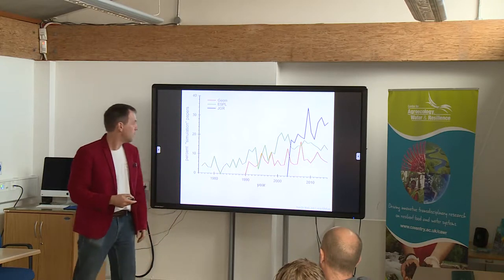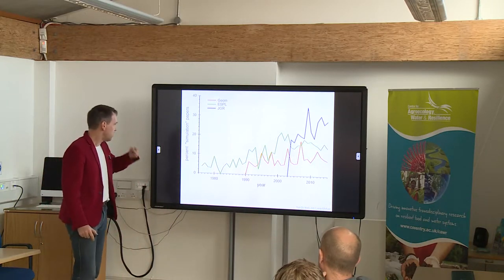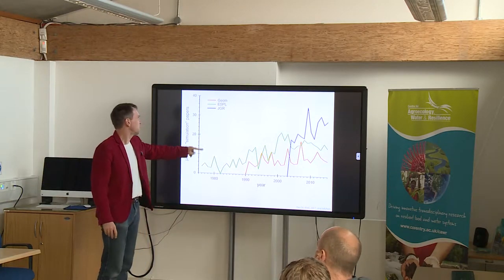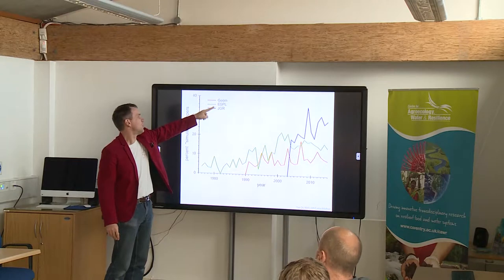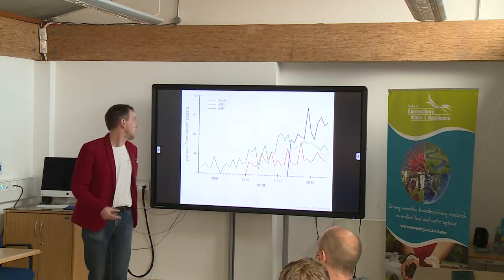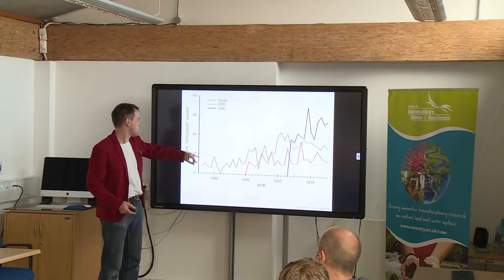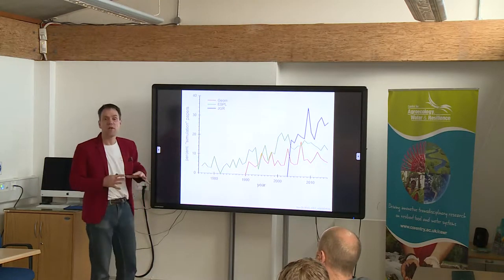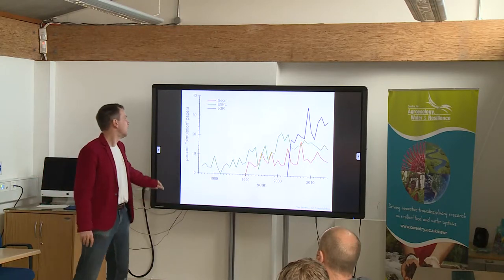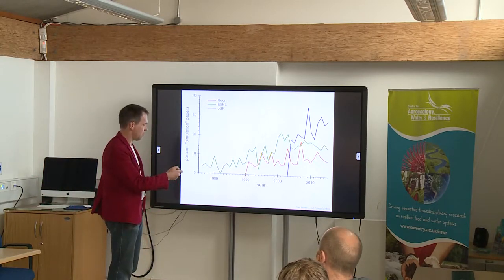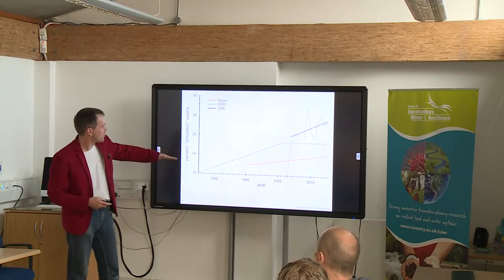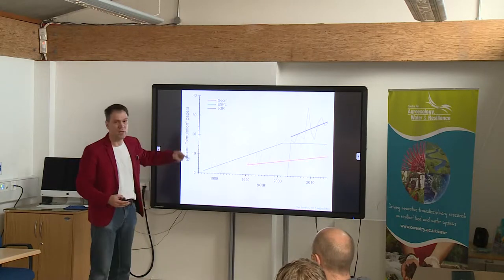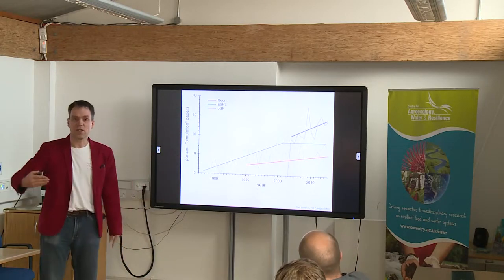This is a graph showing the number of papers in three leading geomorphological journals — Geomorphology, Earth Surface Processes and Landforms, and the Journal of Geophysical Research Earth Processes — showing publications that refer to simulation in some way over time. If you take broad trend lines through there, you can see that the number of papers mentioning simulation, as a percentage of total papers, is just increasing over time.